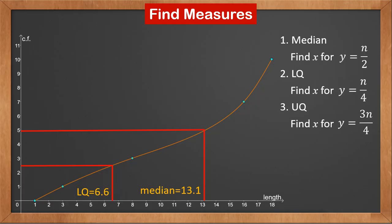To find the upper quartile, we locate 3 quarters of n, 7.5, on the y axis, and find its corresponding x coordinate on the curve. It is approximately 16.4.